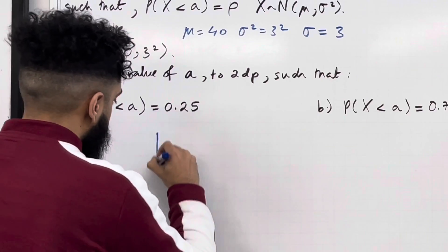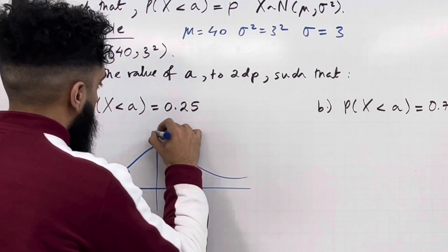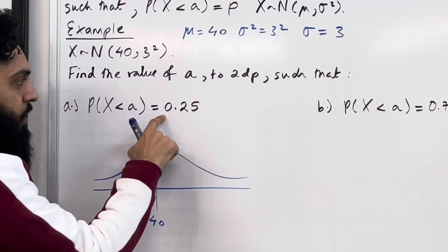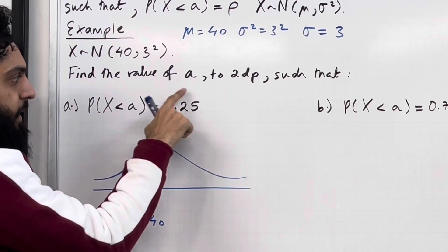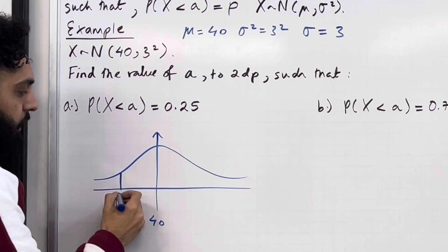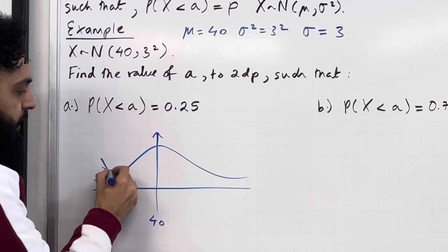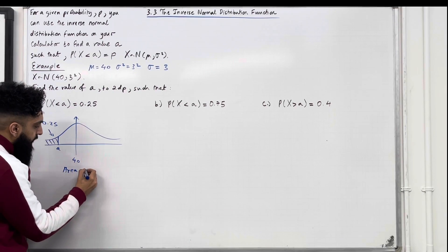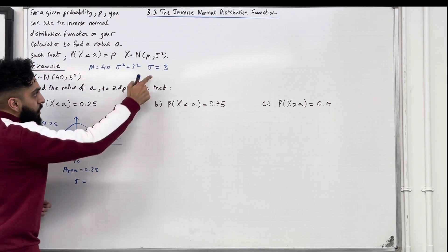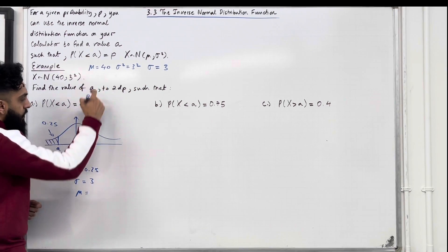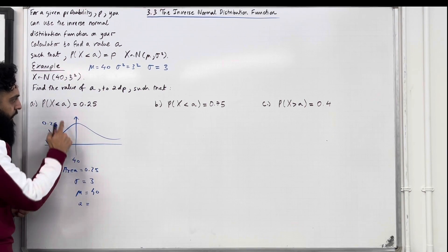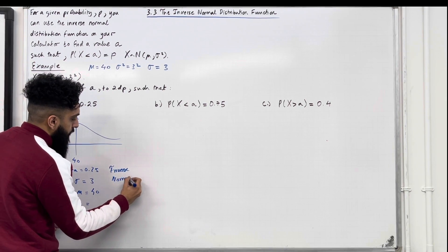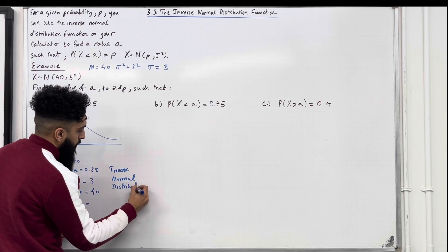Here is my bell-shaped curve. The bell-shaped curve is centered at the mean mu, which is 40. We've got probability X is less than A is equal to 0.25. So the area to the left of A is a small area — it is 0.25 — which means I need to position my A somewhere over to the left. So the area to the left is 0.25, the standard deviation sigma is equal to 3, and the mean mu is equal to 40. I want to work out the value of A to two decimal places by applying the inverse normal distribution function.